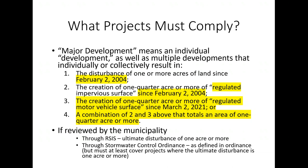The second trigger is the creation of one-quarter acre or more of regulated impervious surface since February 2nd, 2004. The current rules say 'new impervious surface'; this is changed to 'regulated impervious surface' because there are scenarios where we would want to count existing surface toward the threshold due to its significant impact on the water budget.